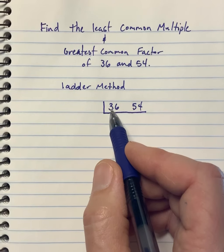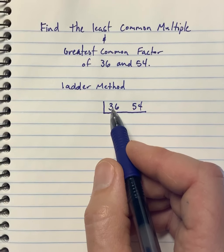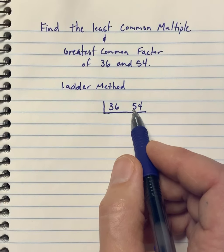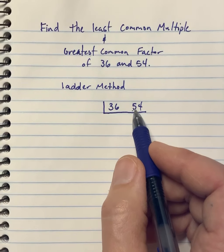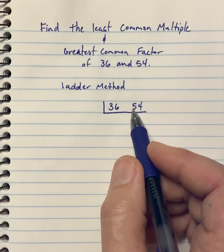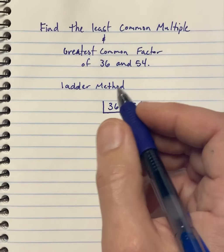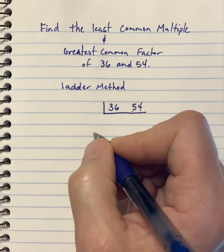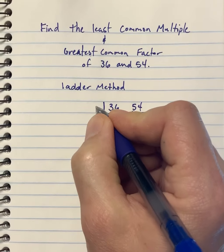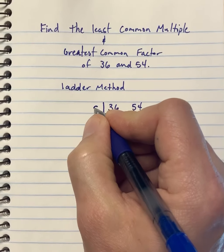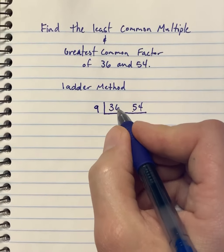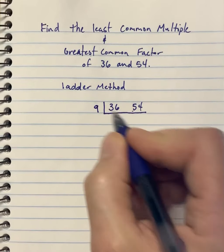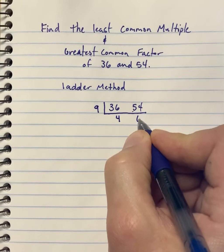I know 36 is 3 times 12, 4 times 9, and 6 times 6. For 54, the one I can think of is 9 times 6. So both 9 and 6 go into 36 and 54. I always try to choose the bigger number, so I'm going to go with 9. 36 divided by 9 is 4, and 54 divided by 9 is 6.